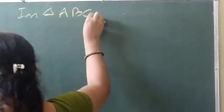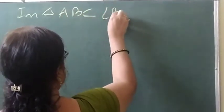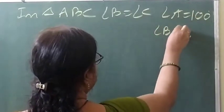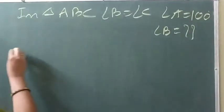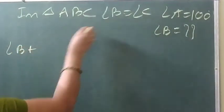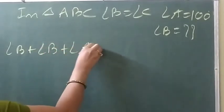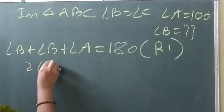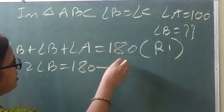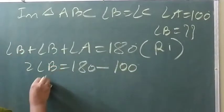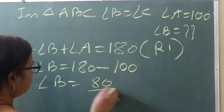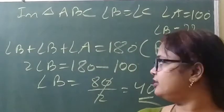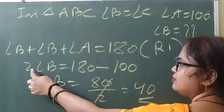In triangle ABC, angle B is equal to angle C, and angle A is 100 degrees. Find angle B. Since B equals C, we write: B plus B plus A equals 180 — Reason 1. So 2B equals 180 minus 100, meaning 2B equals 80, and B equals 80 divided by 2, so angle B equals 40 degrees.